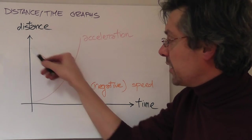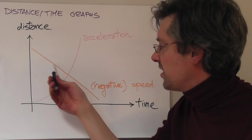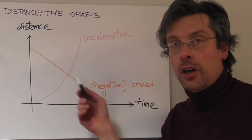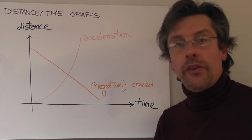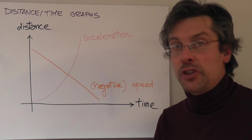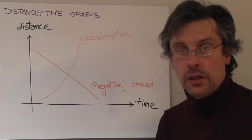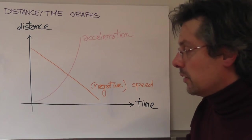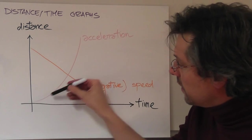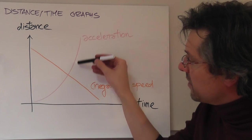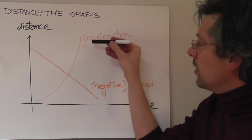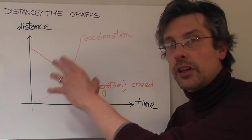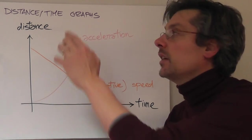How about an object with a negative slope? In this case, you can see the distance is decreasing over time. This object has a constant but negative speed. Finally, an object that has a speed which is not constant — not uniform — will be represented in a distance time graph by a curve. The slope of this curve is increasing, and this is related to acceleration, to a change of speed. When an object changes speed, the line is actually a curve in a distance time graph.